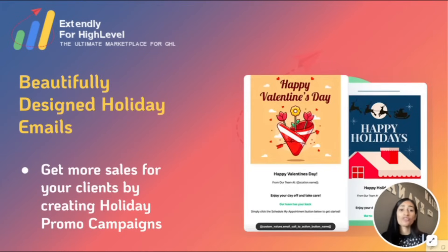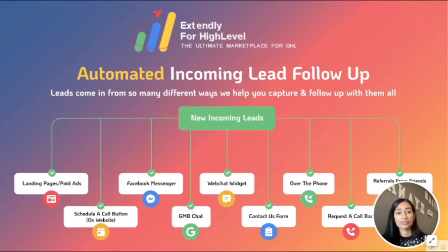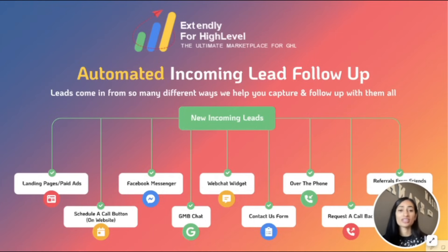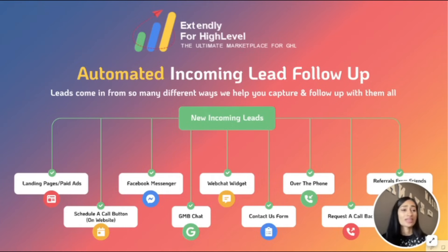We've built in sequences that will follow up with leads for up to five years. But before you begin nurturing leads, you have to capture them. With online marketing, leads can come in from many different ways — so we've developed a system to help you capture leads from all of these different methods and automatically follow up with them all. The snapshot captures and follows up with leads coming in through landing pages, paid ads, scheduling a call, Facebook Messenger, the website chat widget, GMB chat, a contact us form, leads that come in over the phone, our unique request-a-callback feature, and even leads that come in from referrals through friends or family.